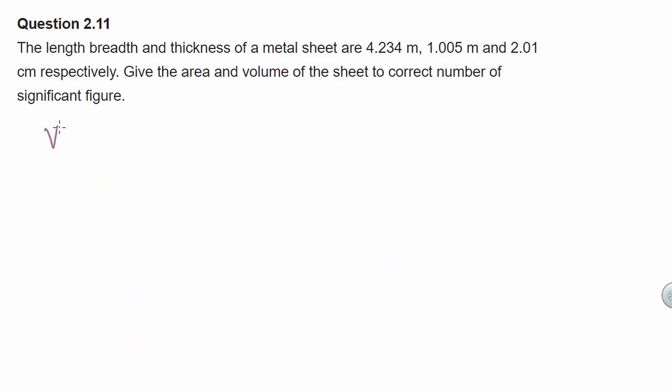Now we will find the volume of the sheet. So volume of the sheet is equal to length into breadth into thickness. Now putting in all these values we get 4.234 times 1.005 times 0.0201 m whole cube.